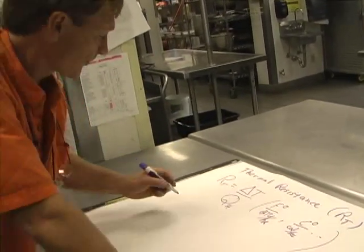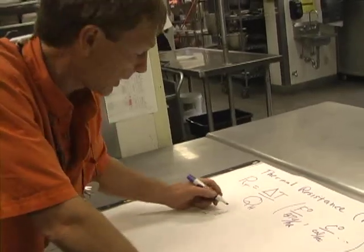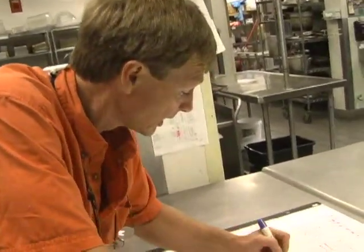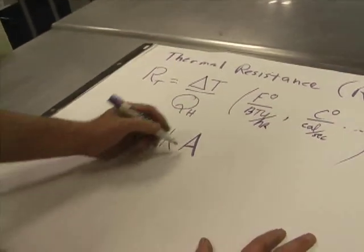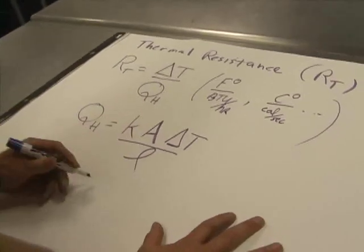Now something else you can do with this though. Remember, heat transfer rate across the material - that's what we're talking about with thermal resistance. We've got heat transfer rate across the material is equal to the thermal conductivity of the material times the area times the temperature difference over the thickness.